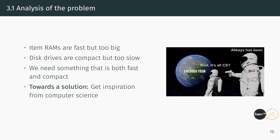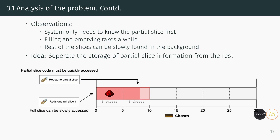The ideal solution would be a device that combines fast retrieval time and a compact size, which would revolutionize the way we build dynamic bulk storage systems. To answer how we can achieve this, we seek inspiration from computer science. Recall that we need to retrieve a specific box quickly, but does the system need to know all the slices allocated to an item type at once? No — the system only needs to know the partial slice first, as it is the slice that will be emptied or filled first. Filling and emptying slices take a while anyway, so the system can take its time to find the other slices. We only need to be quick with queries for the partial slice; the rest can be done in the background.